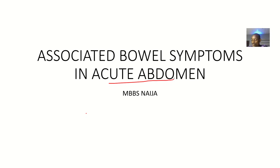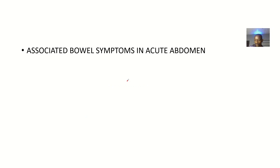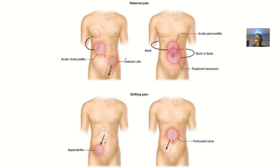There are some possible symptoms that could result in acute abdomen, and that's what we're trying to look at. Associated bowel symptoms in acute abdomen — what is acute abdomen? Acute abdomen is simply an abdominal pain that's acute, all of a sudden and very severe. That's just definition enough.